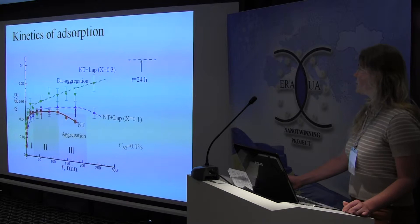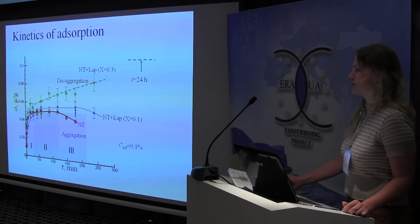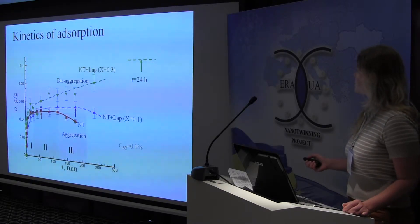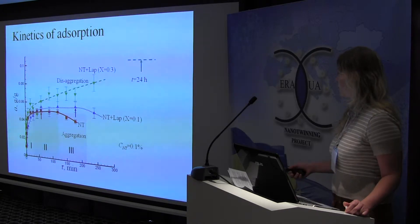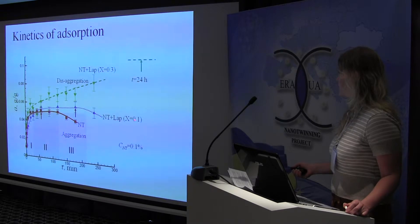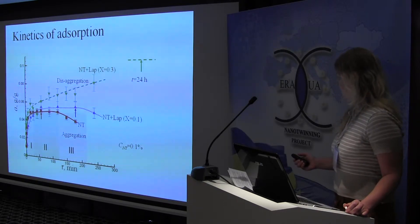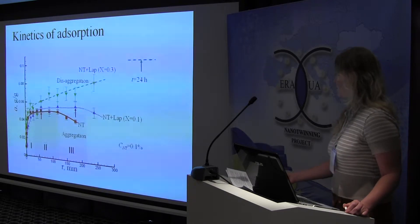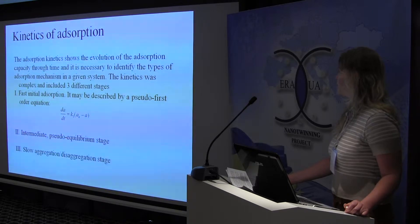First, we investigated the kinetics of adsorption. We obtained curves for different adsorbents: plain nanotubes, nanotubes with laponite at ratio 0.1, and nanotubes with laponite at ratio 0.3. Equilibrium time was different for all adsorbents — 1 hour for plain nanotubes, 3 hours for ratio 0.1, and 24 hours for ratio 0.3. We observed three zones of adsorption: an initial adsorption zone described by a pseudo-first-order equation.